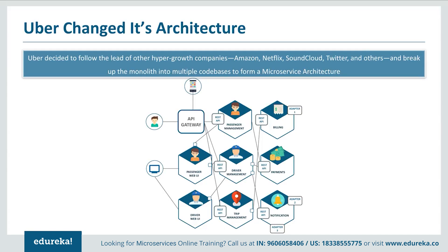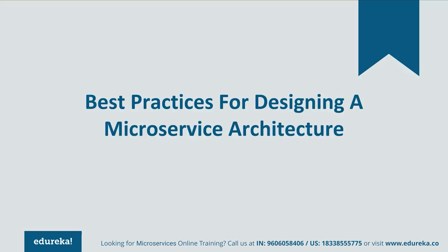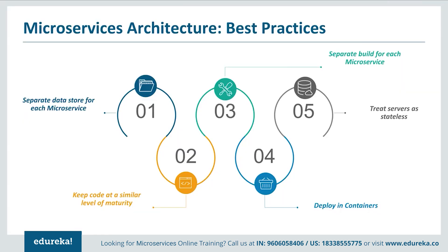Now that you've seen the real life use case of Uber, let's look at best practices to design microservices. Initially, separate the data store for each microservice. Then, keep the code at a similar level of maturity. After this, separately build each microservice according to its respective features and then deploy into containers. Lastly, create the servers as stateless for communication.